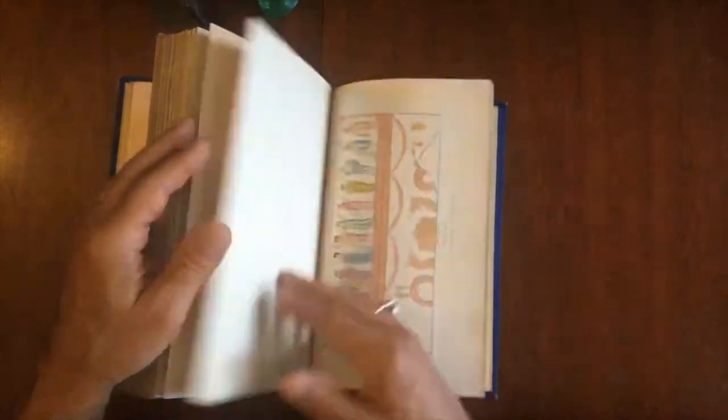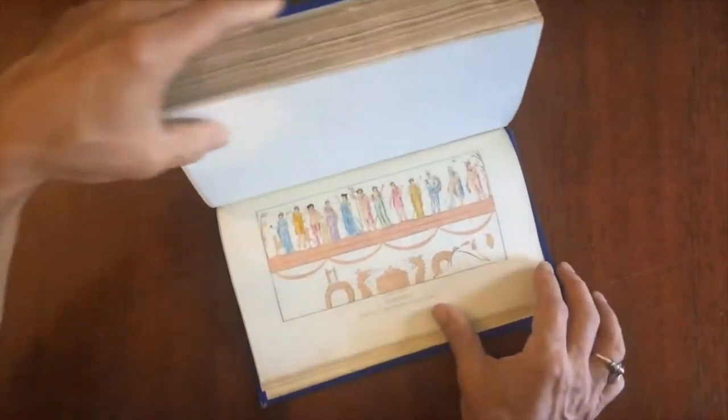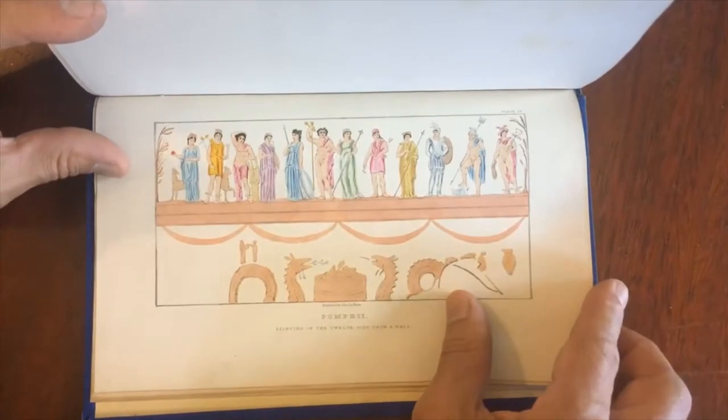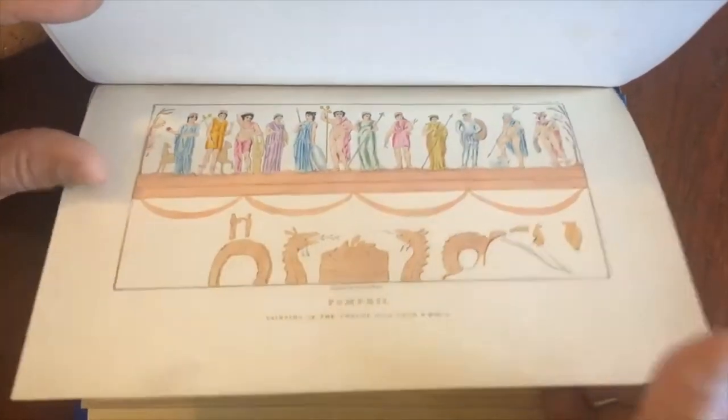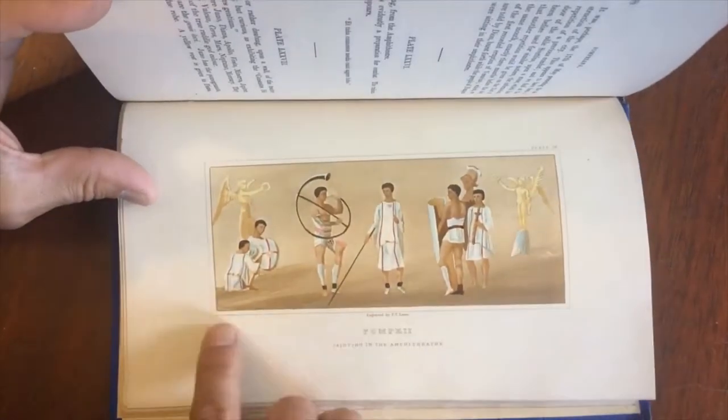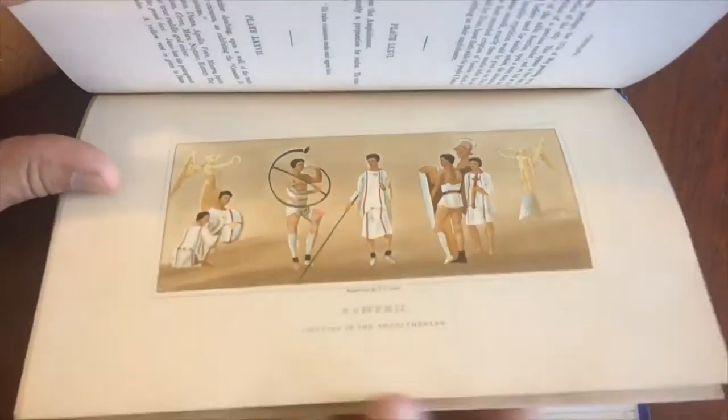This beautiful plate right here is a painting on one of the walls, and this is hand-color, so it was engraving that's been hand-colored. And here's another one with original hand-color. So those are very nice right there.